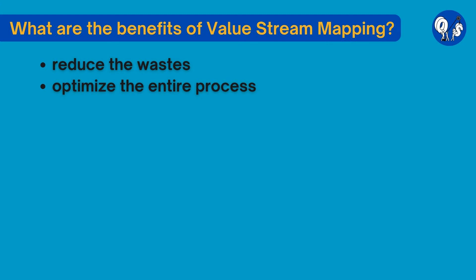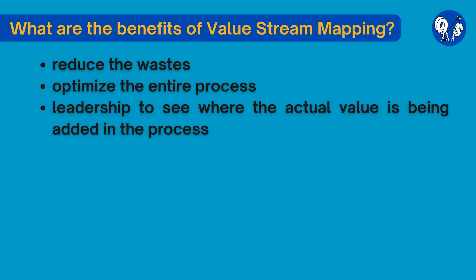Value stream mapping provides us with a structured visualization of the key steps and corresponding data needed to understand and intelligently make improvements that optimize the entire process, not just one section at the expense of another. The value stream mapping enables the team and leadership to see where the actual value is being added in the process, allowing them to improve on the overall efficiency associated with the delivery of a product or feature request, not just the number of steps.